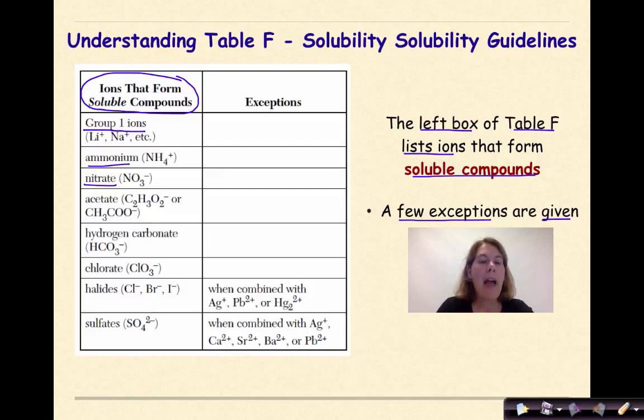Acetate, whether you look at it as C2H3O2-1, or CH3COO-1, which is the more organic form, hydrogen carbonate, HCO3-1, chlorate, ClO3, halides, Cl-1, Br-1, I-1, or sulfates.